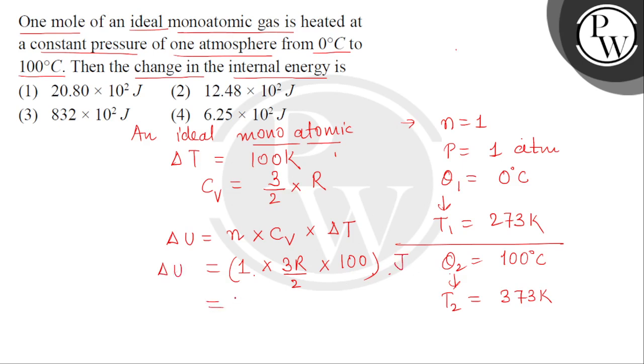So children, this will come to us as 150 times R. R's value is 8.31. So this will be 12.48 multiplied by 10 square Joule. So the correct answer for the change in the internal energy is option number 2. Thank you.